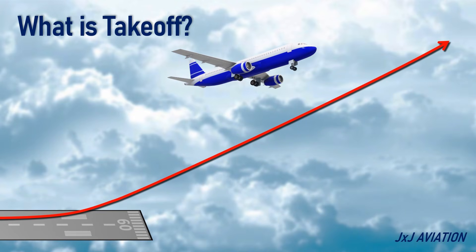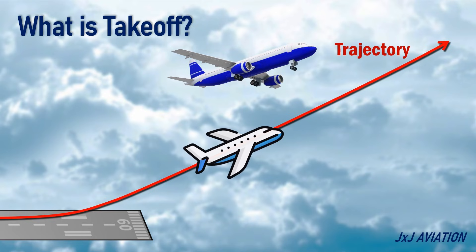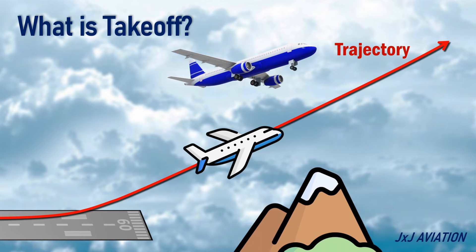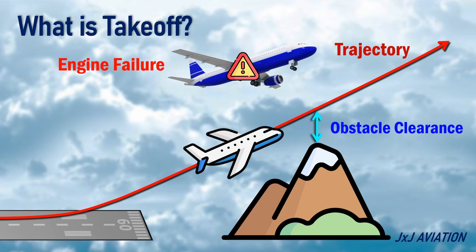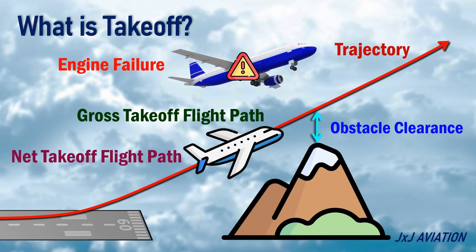The vertical trajectory that the aircraft follows post-lift-off is called the takeoff path. This path may contain obstacles, so the takeoff path must ensure sufficient obstacle clearance, even in case of an engine failure. The takeoff path may be classified as gross takeoff flight path and net takeoff flight path.